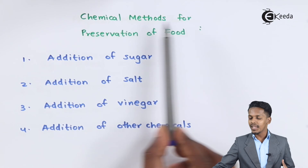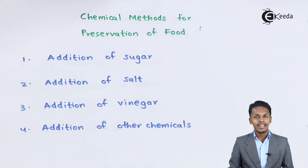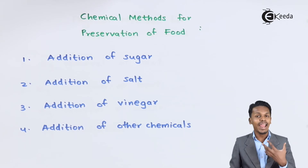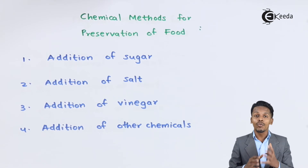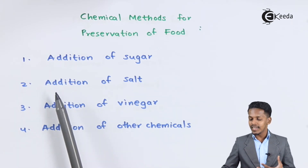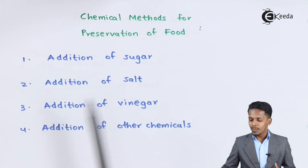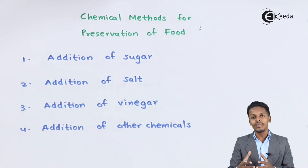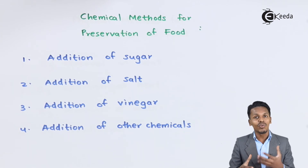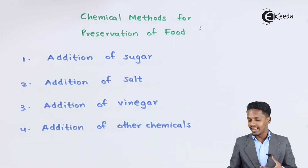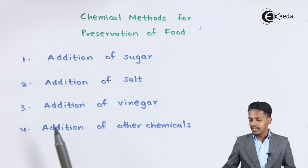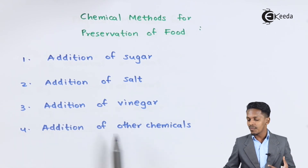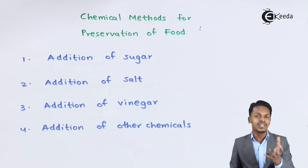Now let me talk about the chemical methods for the preservation of food. The first is addition of sugar. For preparation of jams and jellies, we add a large amount of sugar, which helps preserve the food. The next is addition of salt. Adding salt to food causes an osmosis process, through which bacteria get dried up or killed, preserving the food. We can also preserve food by addition of vinegar, or by adding other chemicals like sodium benzoate.